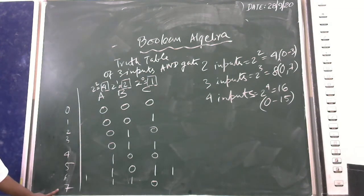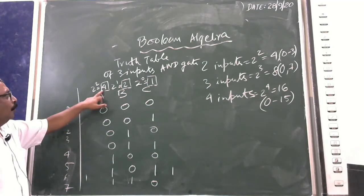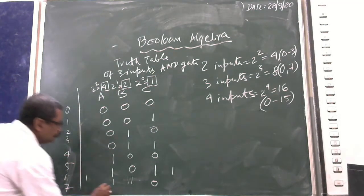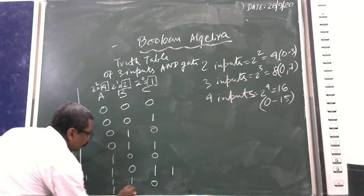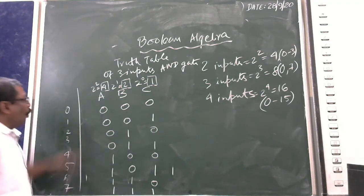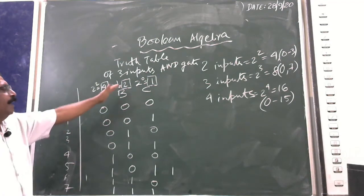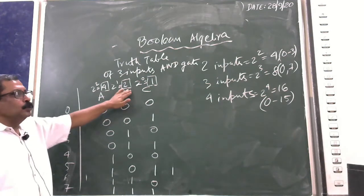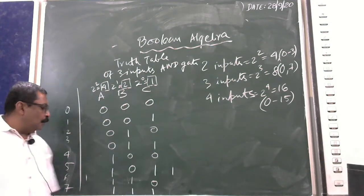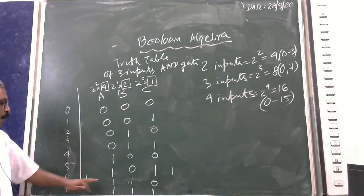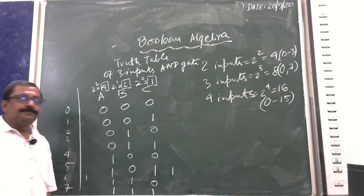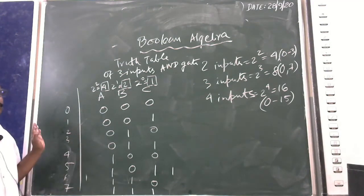The last number is 7. Since 7 = 4 + 2 + 1, all three inputs are ON. That gives the combination 1, 1, 1. That is the complete 3-input truth table.